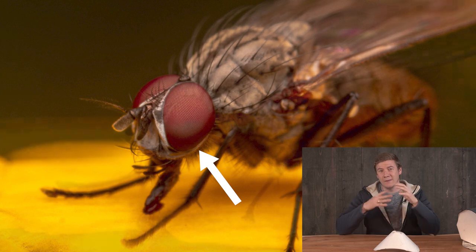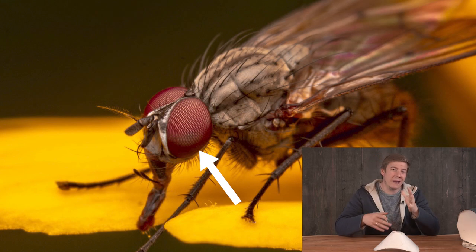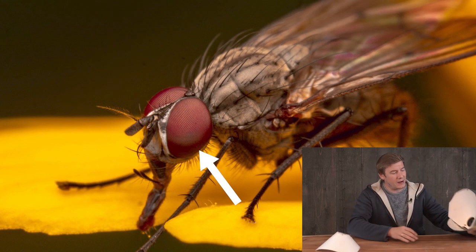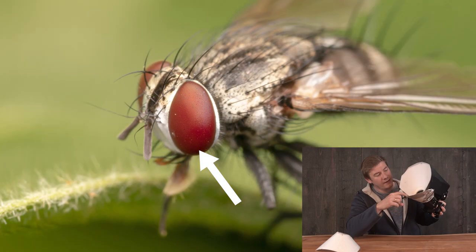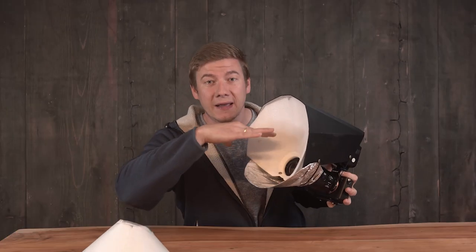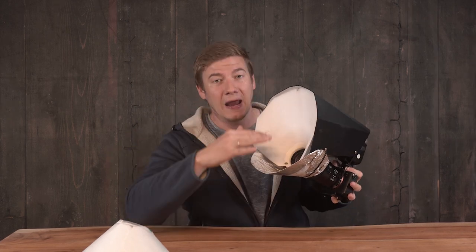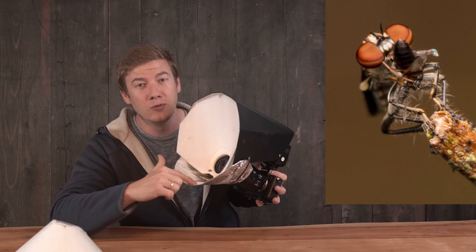And that's why this new setup is very helpful, because this little tool here bounces the light from the bottom back. So the insect can be illuminated from the top with the diffuser and the bottom parts with the new reflector shield.